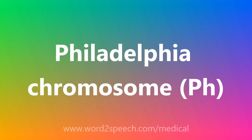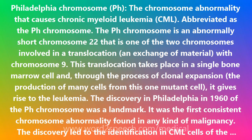The Philadelphia chromosome (Ph) is the chromosome abnormality that causes chronic myeloid leukemia (CML). The Ph chromosome is an abnormally short chromosome 22, one of two chromosomes involved in a translocation — an exchange of material with chromosome 9. This translocation takes place in a single bone marrow cell, and through the process of clonal expansion, gives rise to the leukemia.